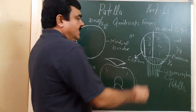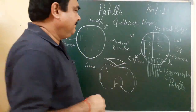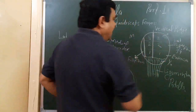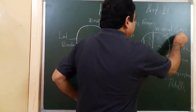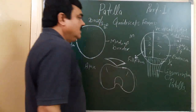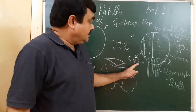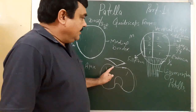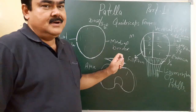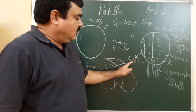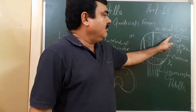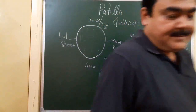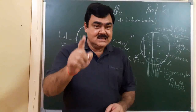During slight flexion, the medial most portion articulates with the condyle. During mid-flexion, the middle part articulates. During full flexion, the medial flange articulates. So this covers the articulation between the patella and the femoral condyle during different ranges of movement — extension, slight flexion, and mid-flexion.